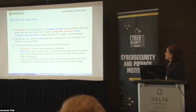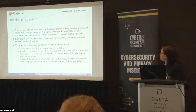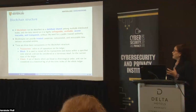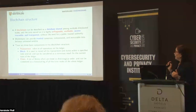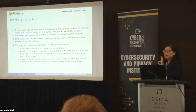They can provide trusted consensus, computation, and immutable data among untrusted entities — that's the most important property of blockchain. Although it is a distributed system, this is the property they added. For blockchain technologies, we have three basic components: the first is what we call the transaction, which is all operations on the system; the second is what we call the block; and the third concept is the chain.